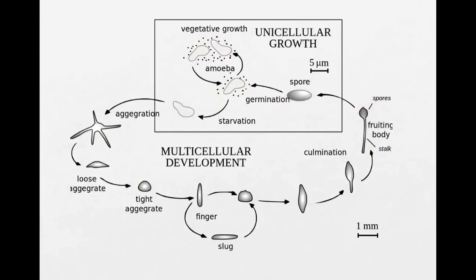There are amoeba in there, but they undergo a reproductive phase. They produce, in this fruiting body, only a few amoeba. It's not all of them that form this fruiting body. Only a few of these amoeba form these spores.